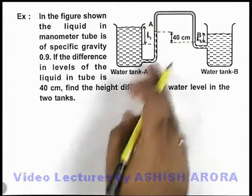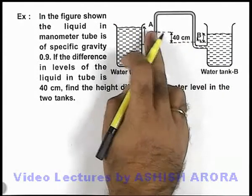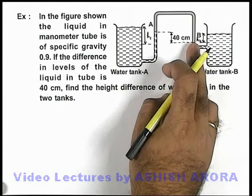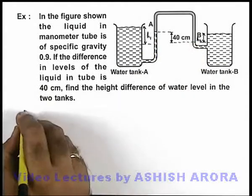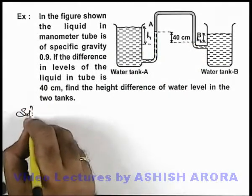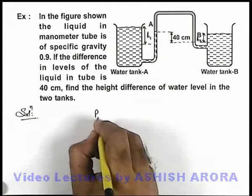We talk about pressure at point A and pressure at point B. So in this situation we can directly write that pressure at point A and B are related as pressure at point A is PA.